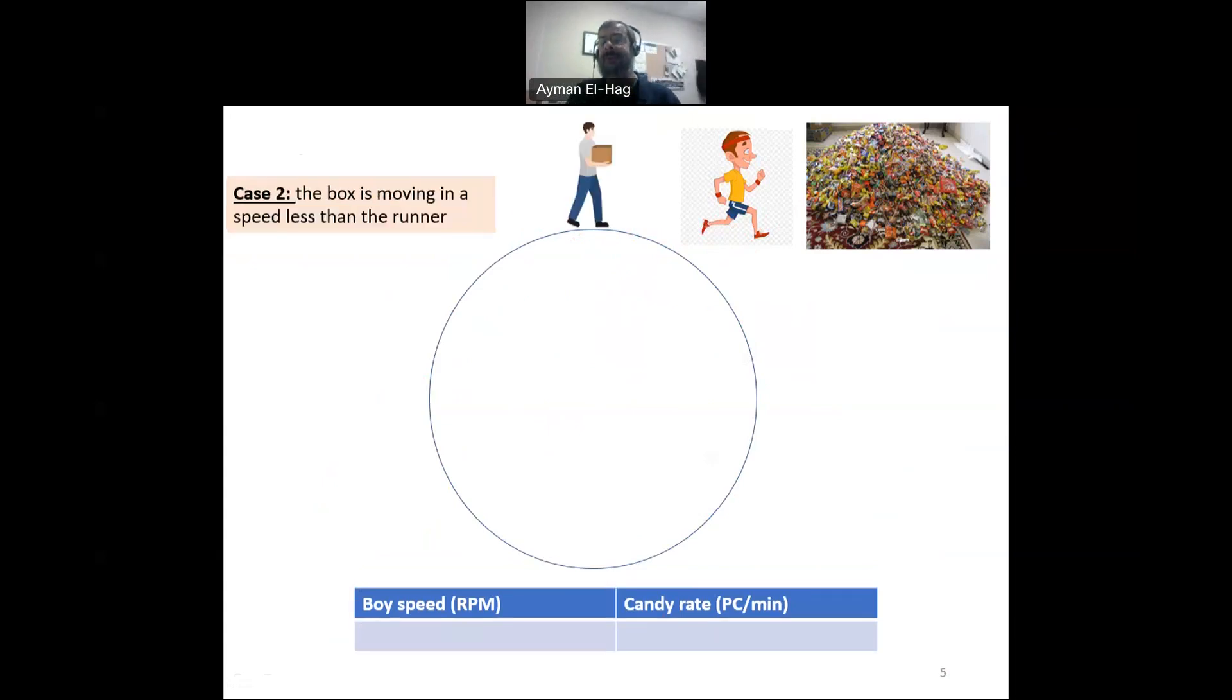Let's now assume that the runner is running at certain speed. But the box now is not stationary. Someone is holding the box and moving with a speed less than the speed of the runner, which is now the case in the induction machine. Induction machine, the rotor will rotate always at a speed less than the synchronous speed. Let's see what will happen. And let me assume that the runner is going at a speed 2 RPM and the man at 1 RPM. So here it is at 2. The boy's speed is 2.